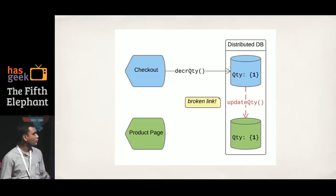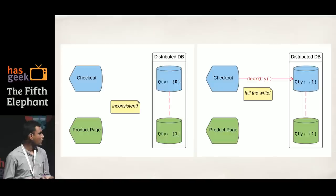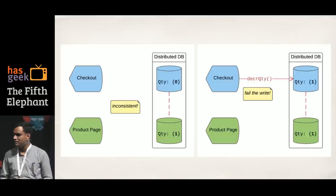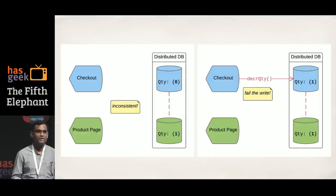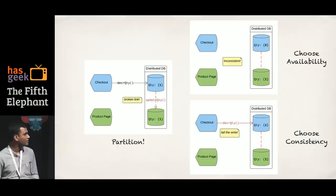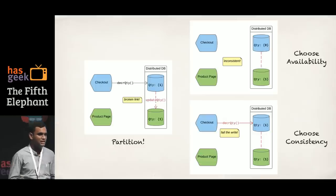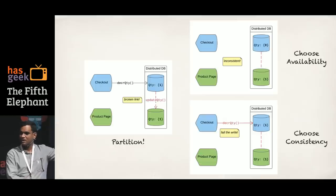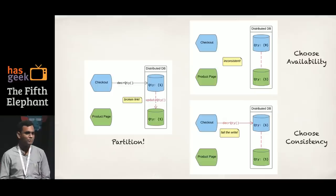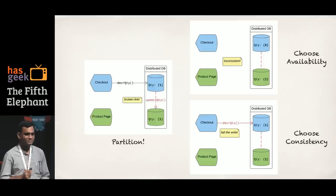With a broken link, we have two options for that decrement-quantity call: option A, let the call happen and leave the database in an inconsistent state; or option B, do not allow the call to happen. And this is essentially the CAP theorem — if there is a partition, you choose availability and forego consistency, or you choose consistency and forego availability. By the way, this is very similar to how the paper proves CAP theorem; there's no math involved, it's a plain-English proof.